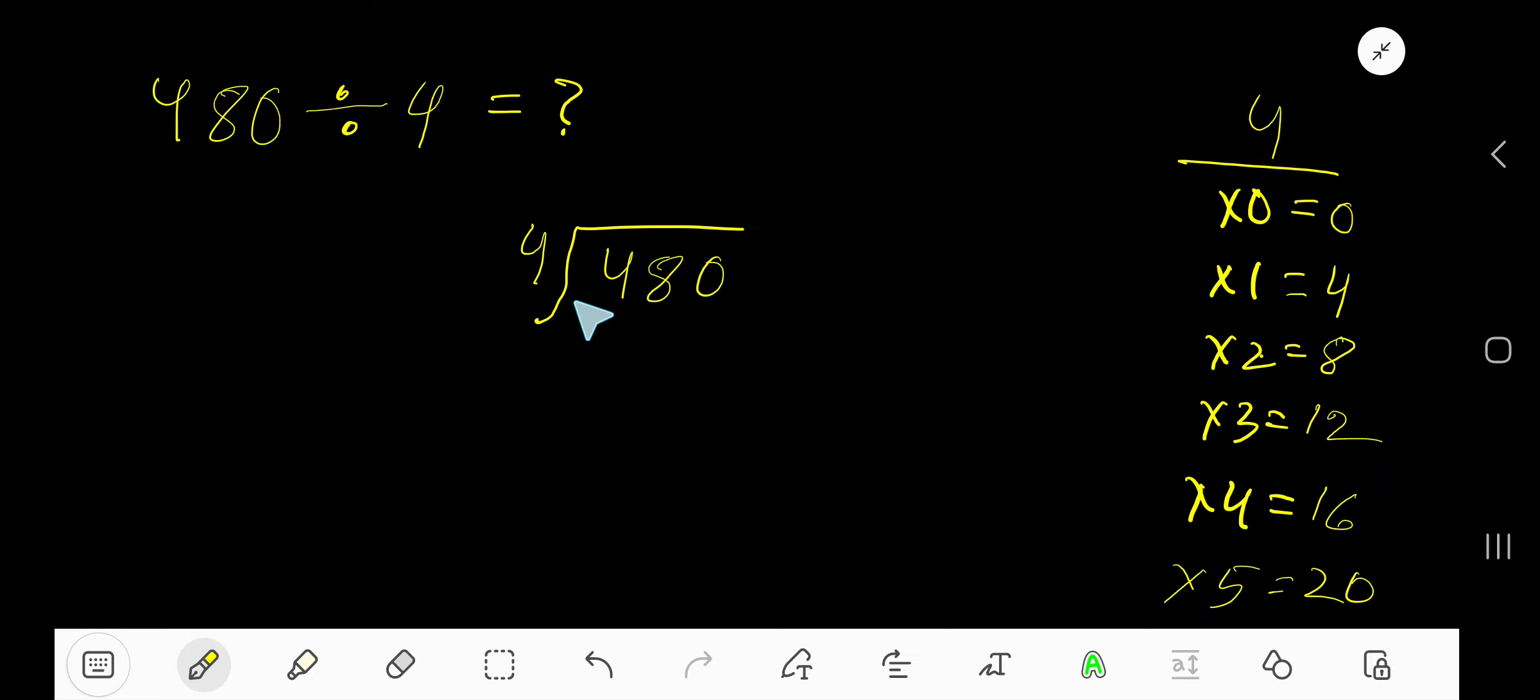12 plus 4 is 16. 4 goes into 4 how many times? 1 time. 1 times 4 is 4, subtract to get 0. Bring down the 8. 4 goes into 8 how many times? 2 times. 2 times 4 is 8, subtract to get 0.